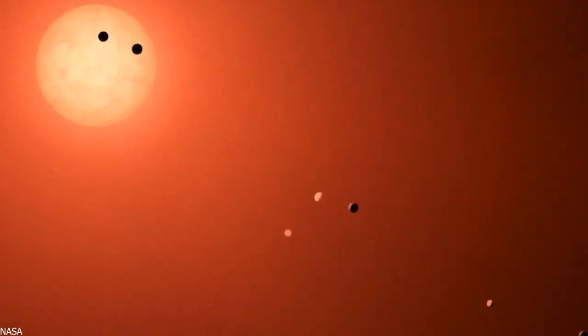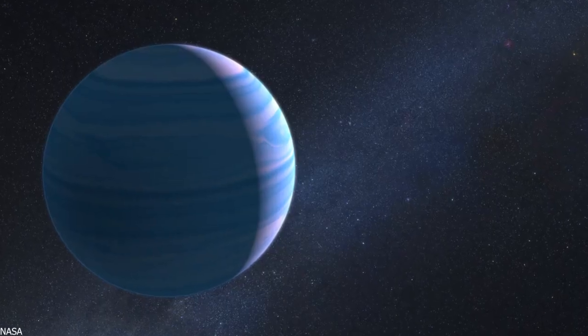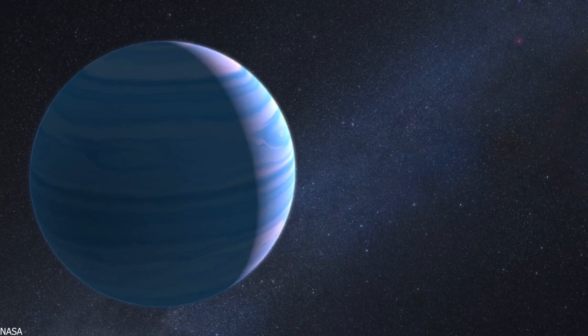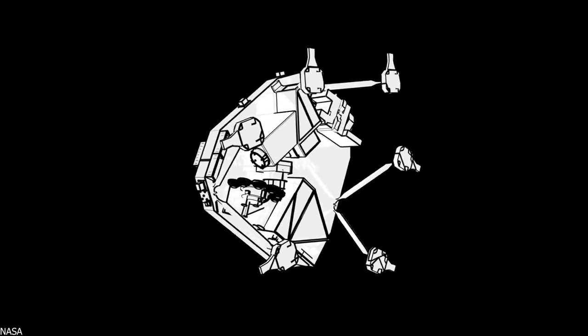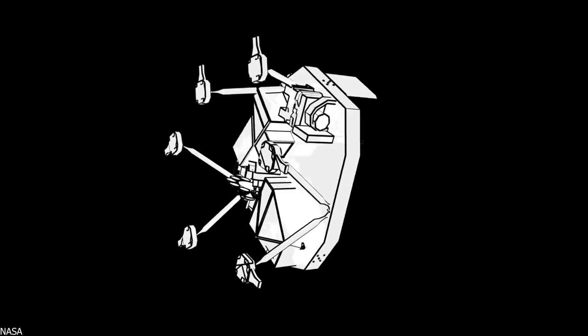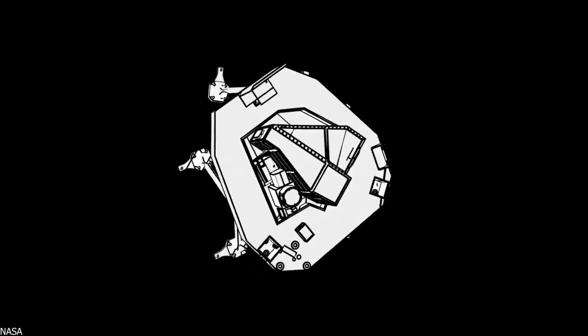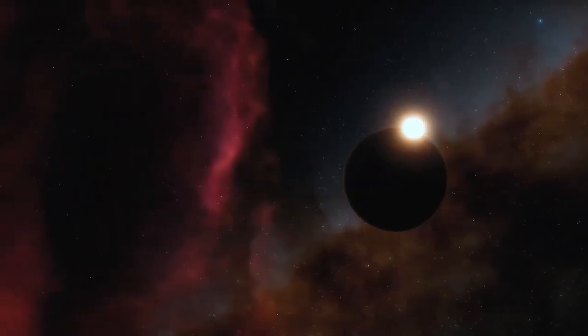Because of its large size, short orbital period, puffy atmosphere, and lack of contaminating light from nearby objects, WASP-96b is an ideal target for atmospheric observations. Webb's Near Infrared Imager and Slitless Spectrograph, or NIRISS for short, measured light from the WASP-96 system for 6.4 hours on June 21st as the planet passed across the star.